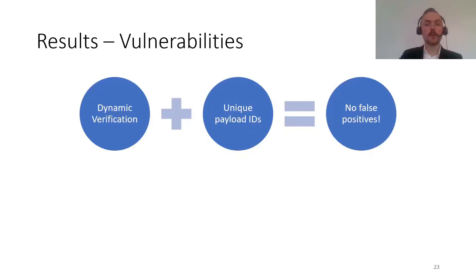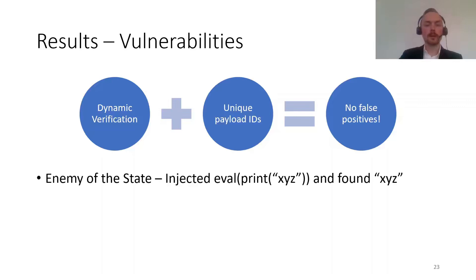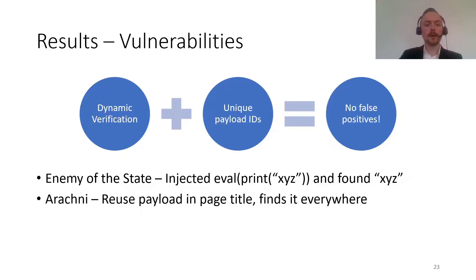Another positive feature of Black Widow is that we have no false positives in this empirical study, and in general a very low false positive rate. This is because we use dynamic verification together with unique payload IDs. Other scanners struggled with this: Enemy of the State at one point injects an eval statement that tries to print a string and then finds this string in the response, incorrectly deeming it a vulnerability. Arachne used dynamic verification but reused payloads, and after injecting a payload into the page title — which triggered on every page load — it thought it found vulnerabilities in every subsequent input. By combining dynamic verification and unique payloads, we keep false positives to a minimum.